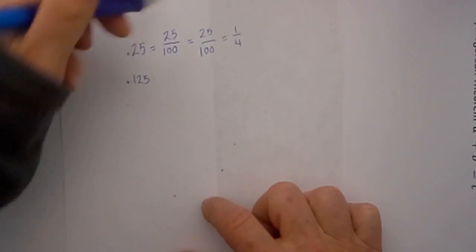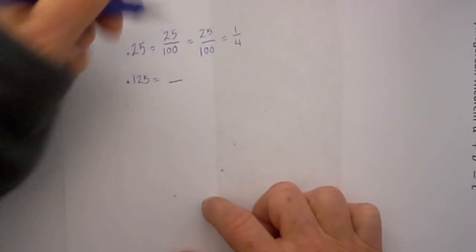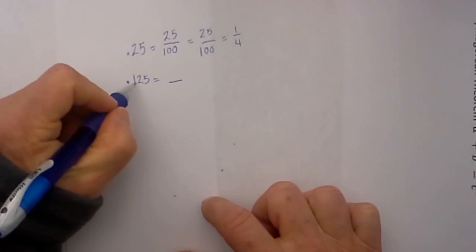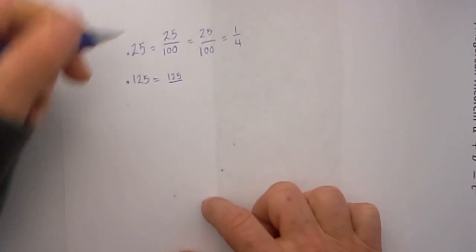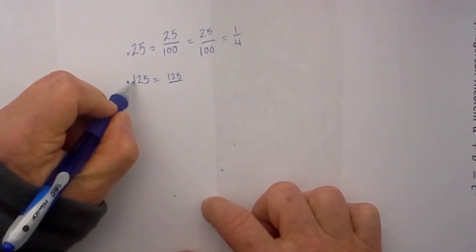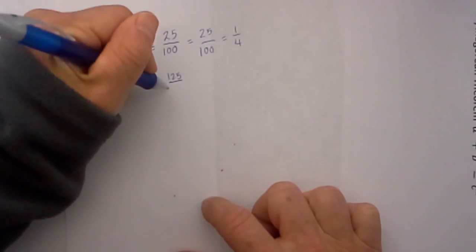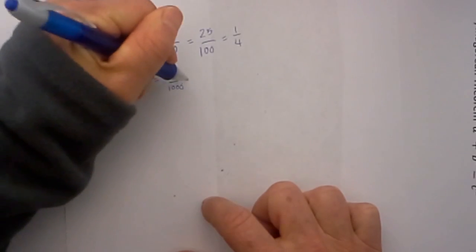Convert .125 into a fraction. Step 1: I will create a fraction. I will write .125 as the numerator. I will look at the last digit and I know that it is tenths, hundredths, thousandths. So I will place that over 1000.